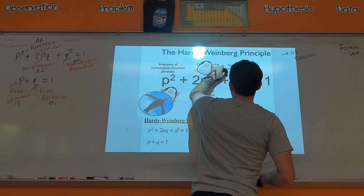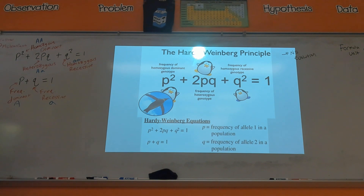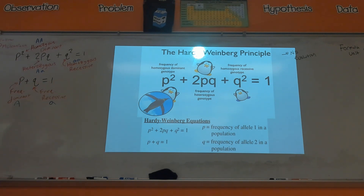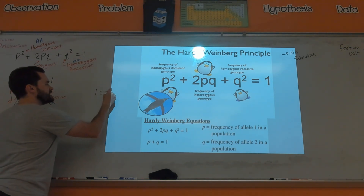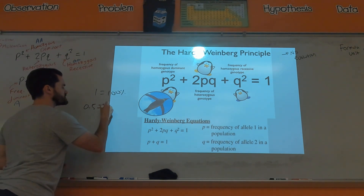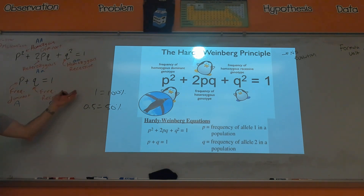Now for the actual math: how you calculate whether a population is in Hardy-Weinberg equilibrium uses two formulas on your formula sheet. The first is p + q = 1, where p is the frequency of the dominant allele and q is the frequency of the recessive allele. They equal one because frequencies work like percentages divided by 100 — so 1 equals 100%, and 0.5 equals 50%.